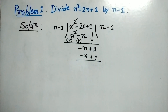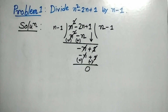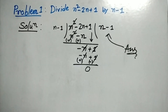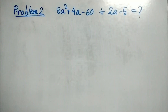After subtraction we got 0 as remainder, so n minus 1 is the quotient for this division. The answer is n minus 1. Our next problem is 8a squared plus 4a minus 60 divided by 2a minus 5.